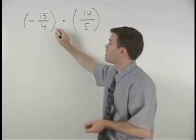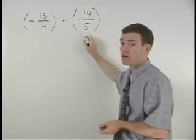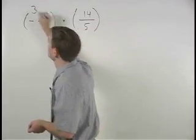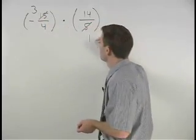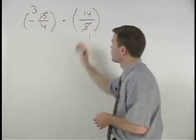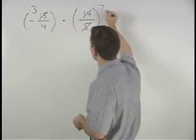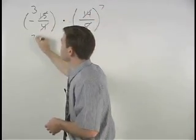So in this problem, the 15 and 5 cross cancel to 3 and 1. The 14 and 4 also cross cancel to 7 and 2.